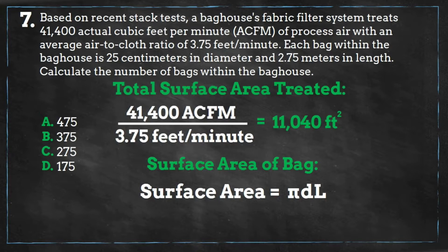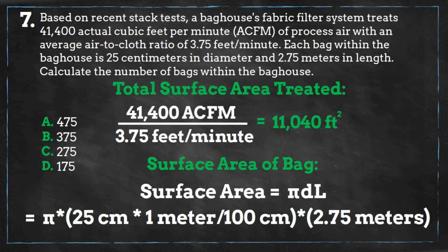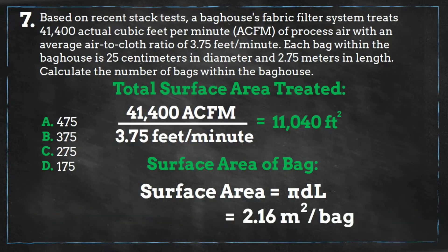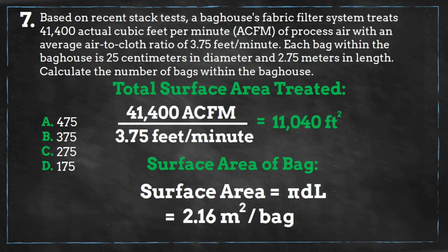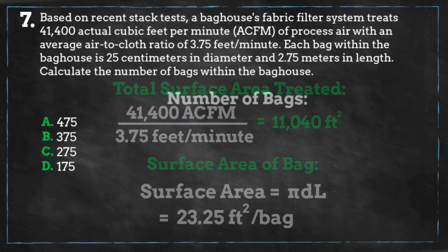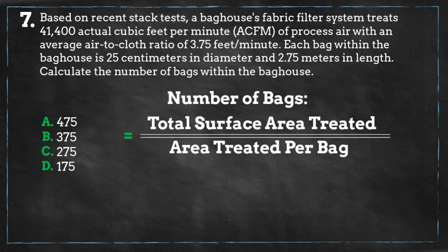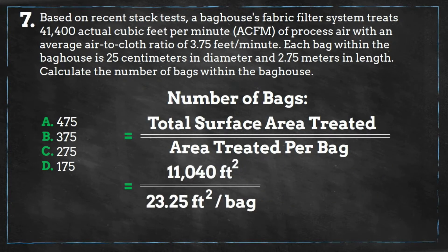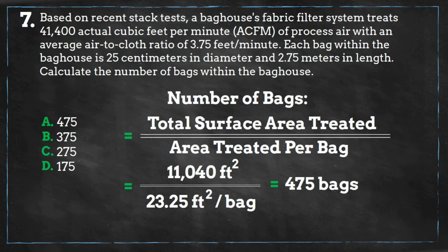Next, calculate the surface area of one bag using the surface area equation for a cylinder: pi times diameter times length. Remember to do your unit conversions. You'll get a surface area for one bag of 23.25 square feet. Lastly, divide the surface area treated by the area per bag, and you'll get an answer of 475, which is A.